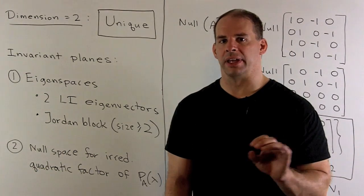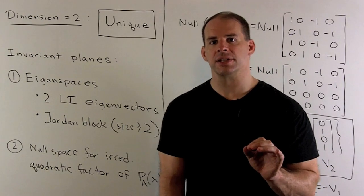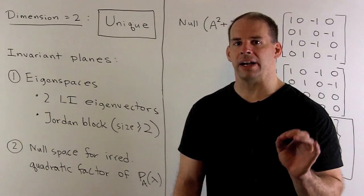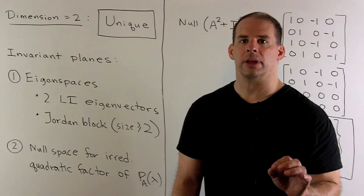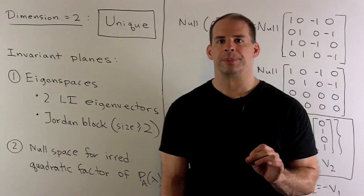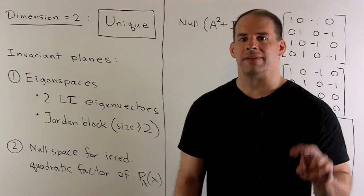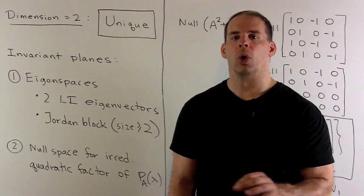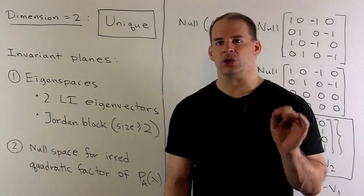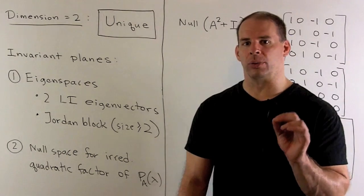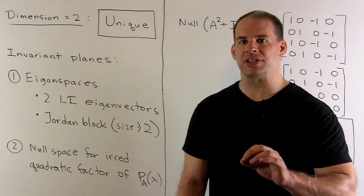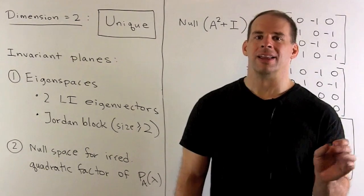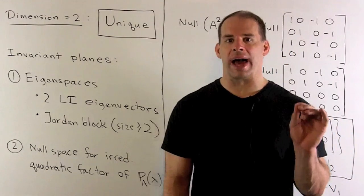Now, where we will find something is in dimension two. In this case, the invariant subspace is unique. How do we find an invariant plane? If we have eigenspaces, two things we can try. If I could find two linearly independent eigenvectors, we could take their span. Or, if we have a Jordan block of size greater than or equal to two, in the corresponding basis, we can find two vectors that will span an invariant plane. This is not our case, since we have no eigenspaces.